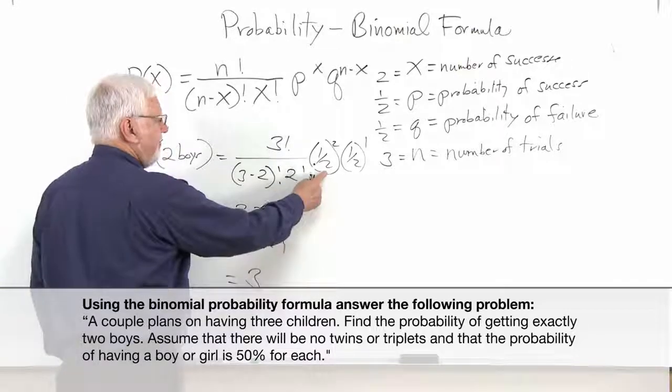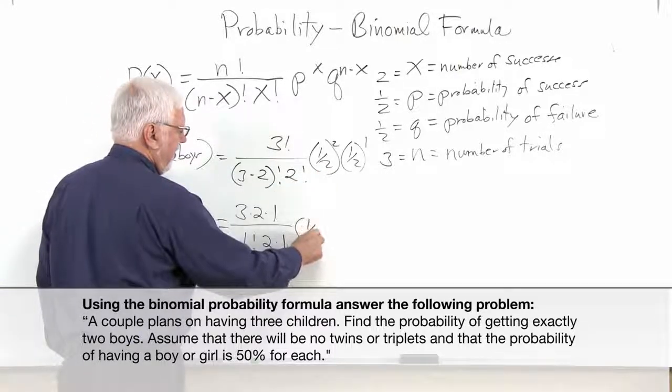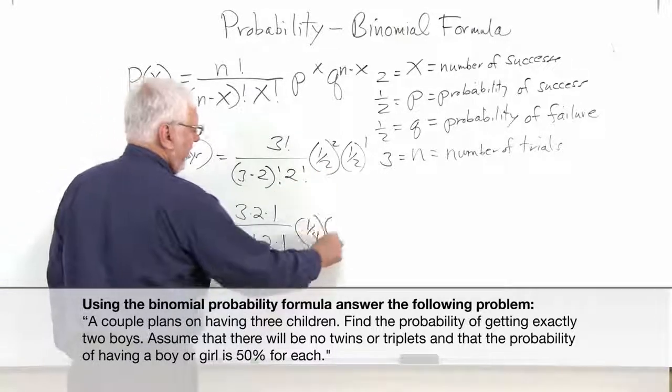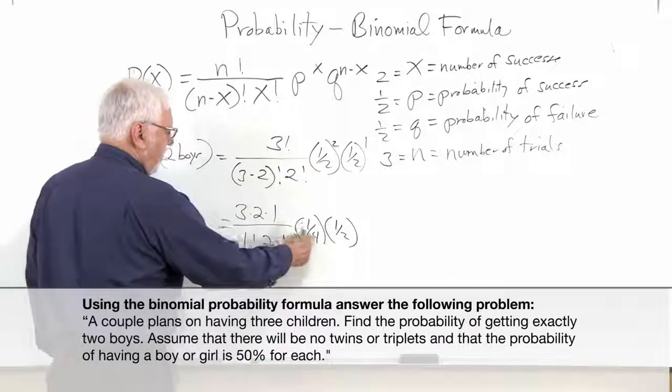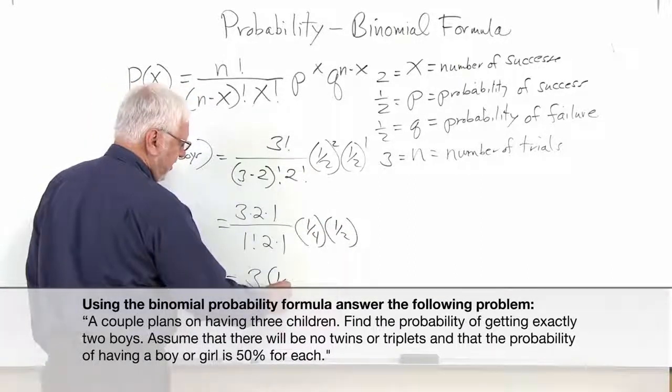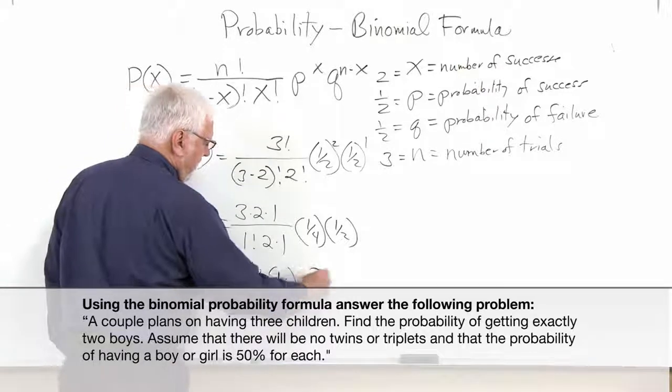Now what's this going to be? It's going to be a half times a half or a fourth. And this will be a half. And then a fourth times a half is an eighth. So we get our three eighths.